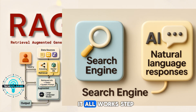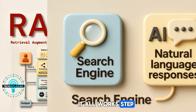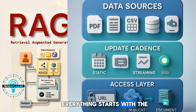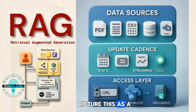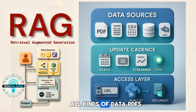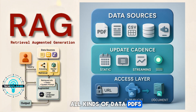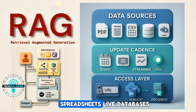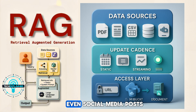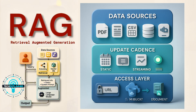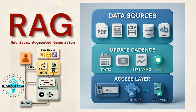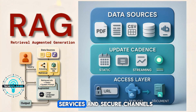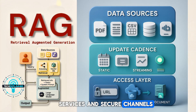Let's break down how it all works, step by step. Everything starts with a knowledge base — picture this as a giant library filled with all kinds of data: PDFs, spreadsheets, live databases, even social media posts. Data streams in regularly, sometimes in batches, sometimes instantly through cloud services and secure channels.